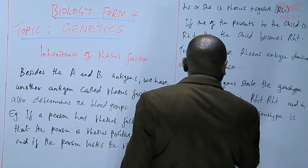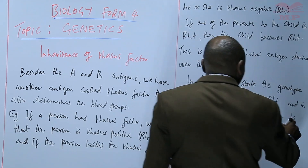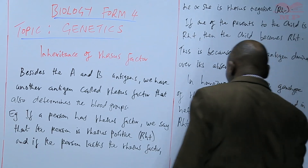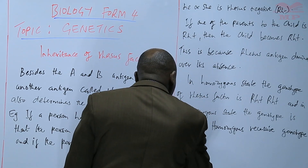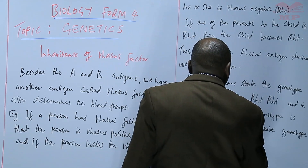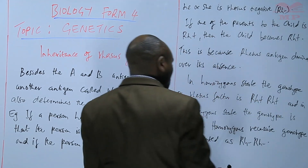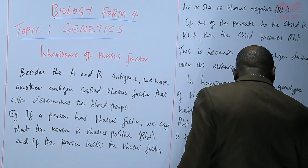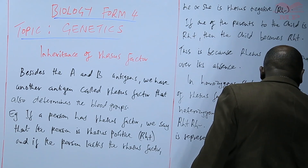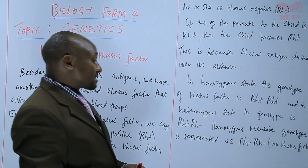The homozygous recessive genotype is represented as RH negative, RH negative. That means no Rhesus factor in a homozygous recessive state.